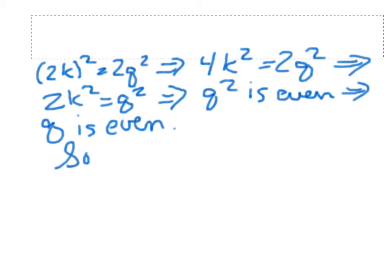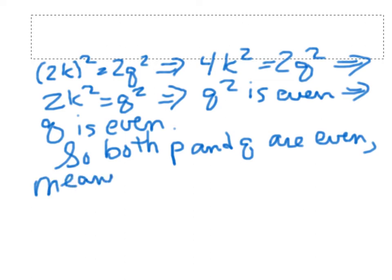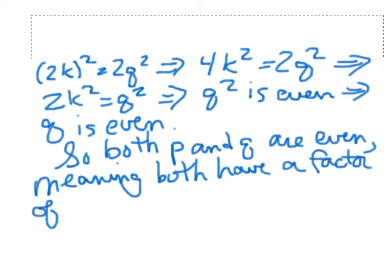So what have we figured out? We figured out that both p and q are even. Meaning what? It means they both have a factor of 2 inside them, which contradicts the fact that they were supposed to not have a common factor, that the fraction p over q was supposed to be reduced already.